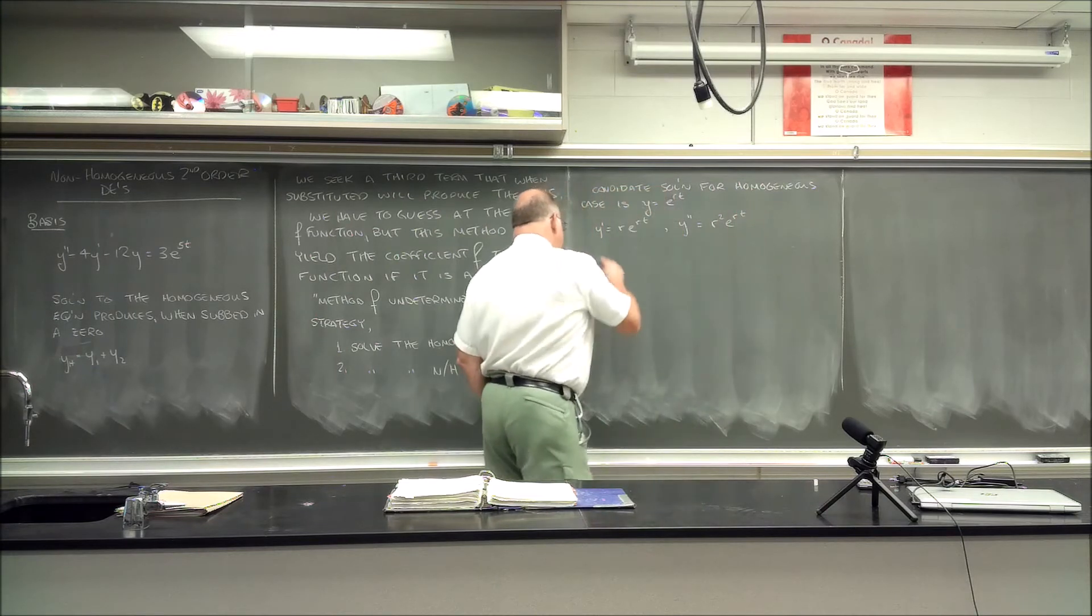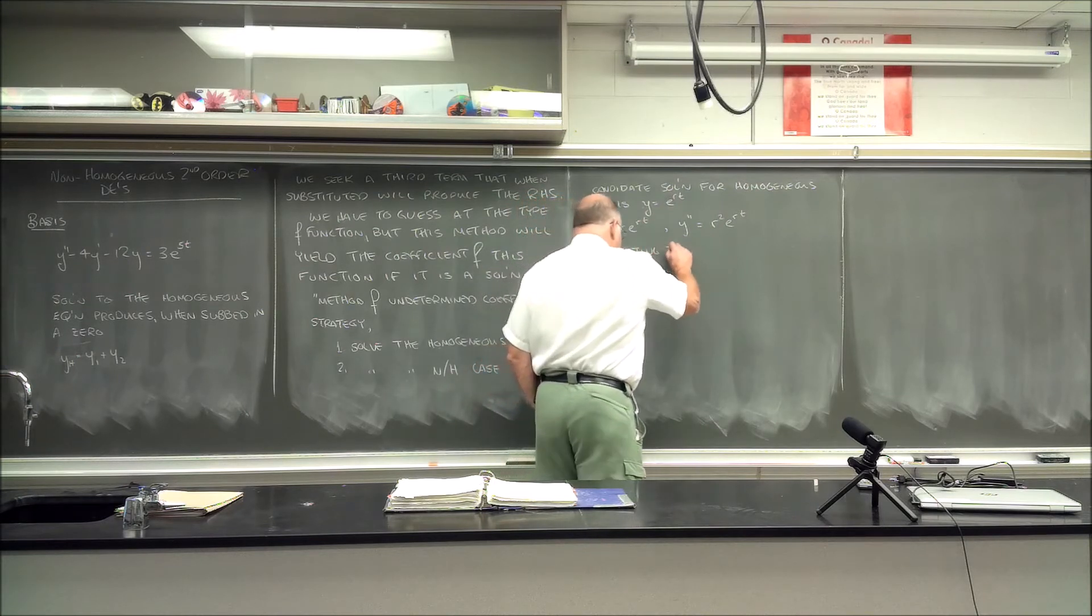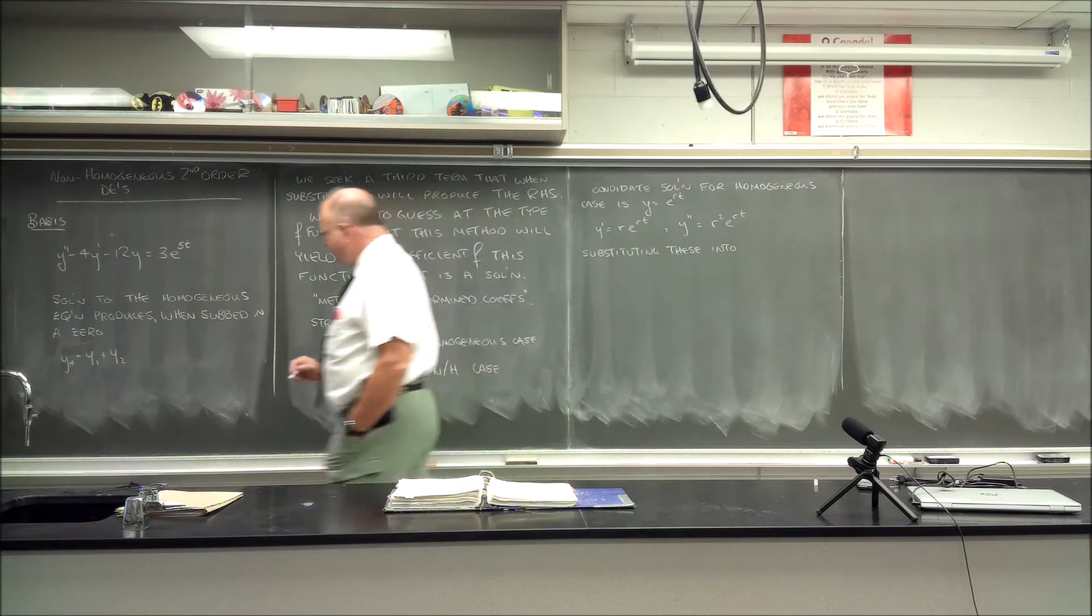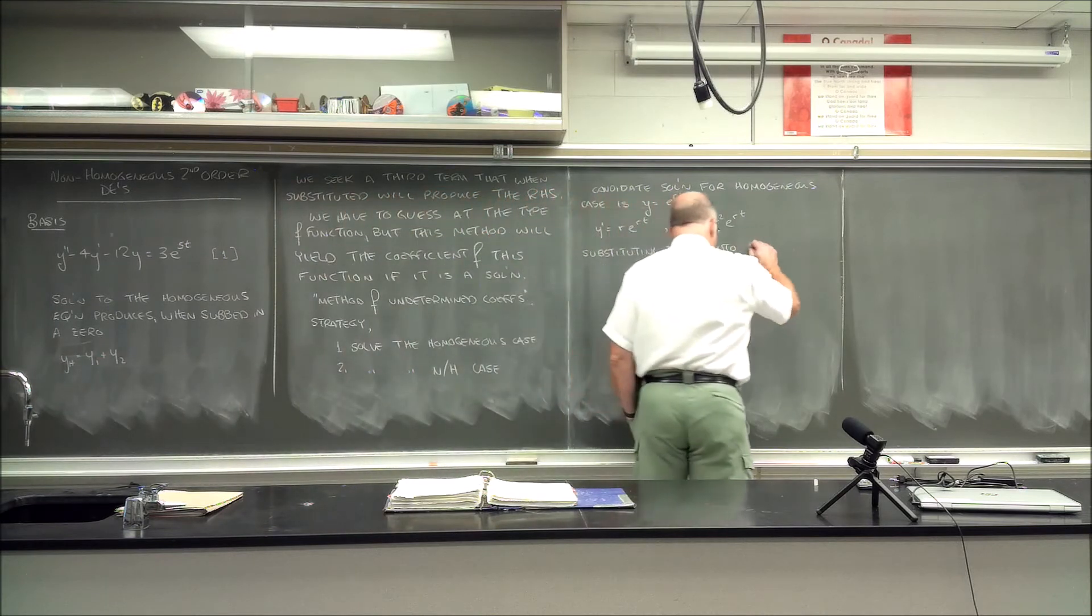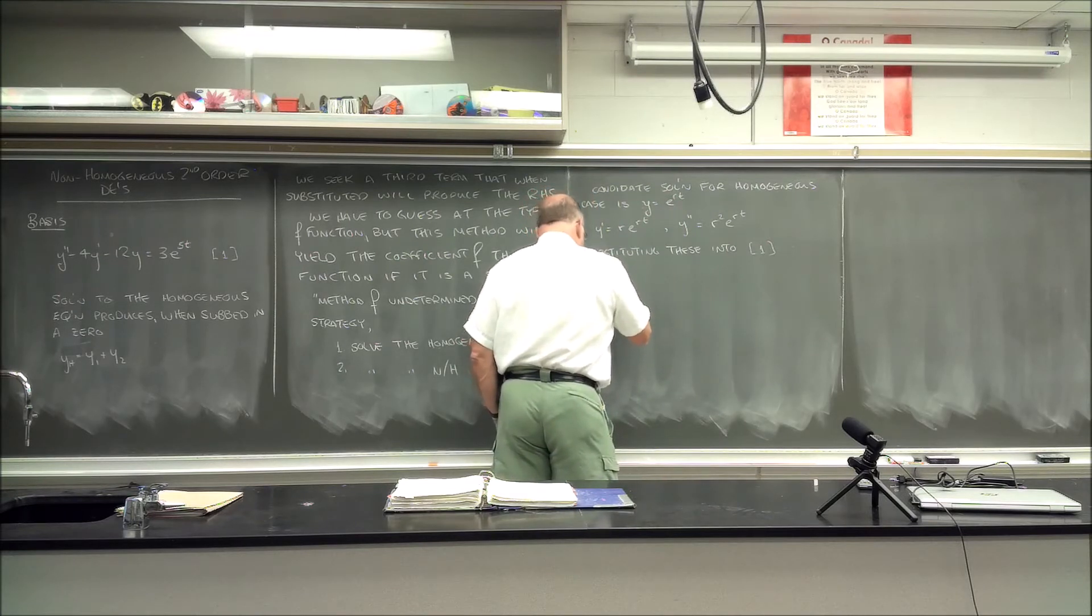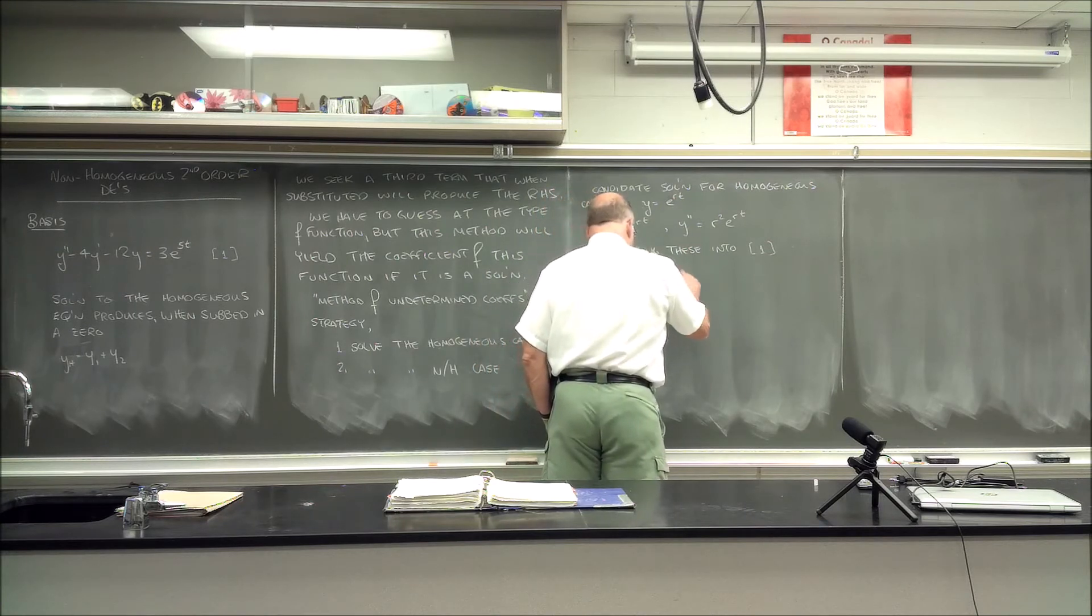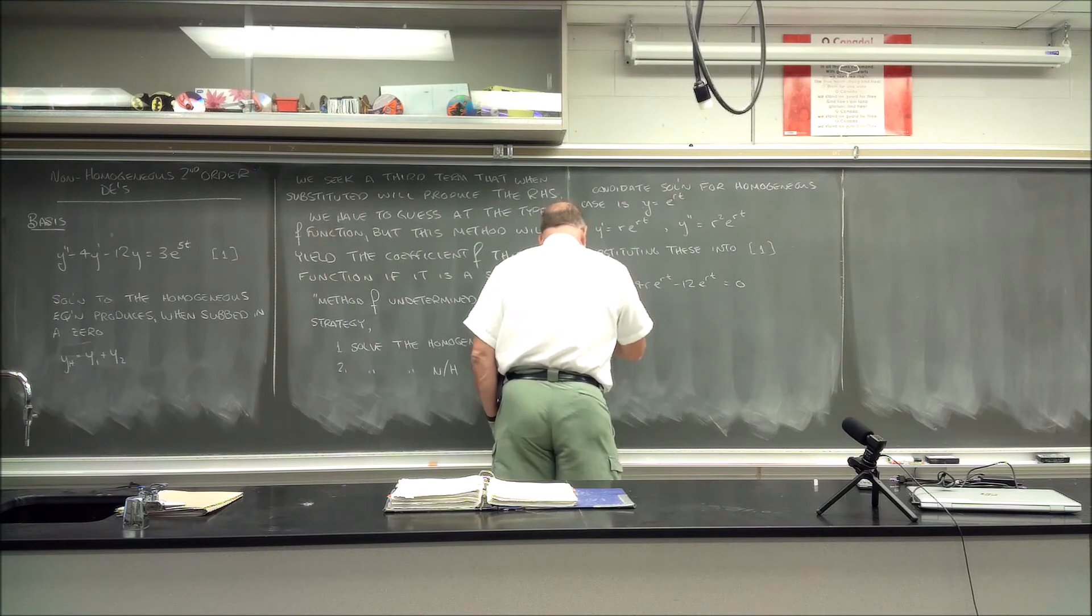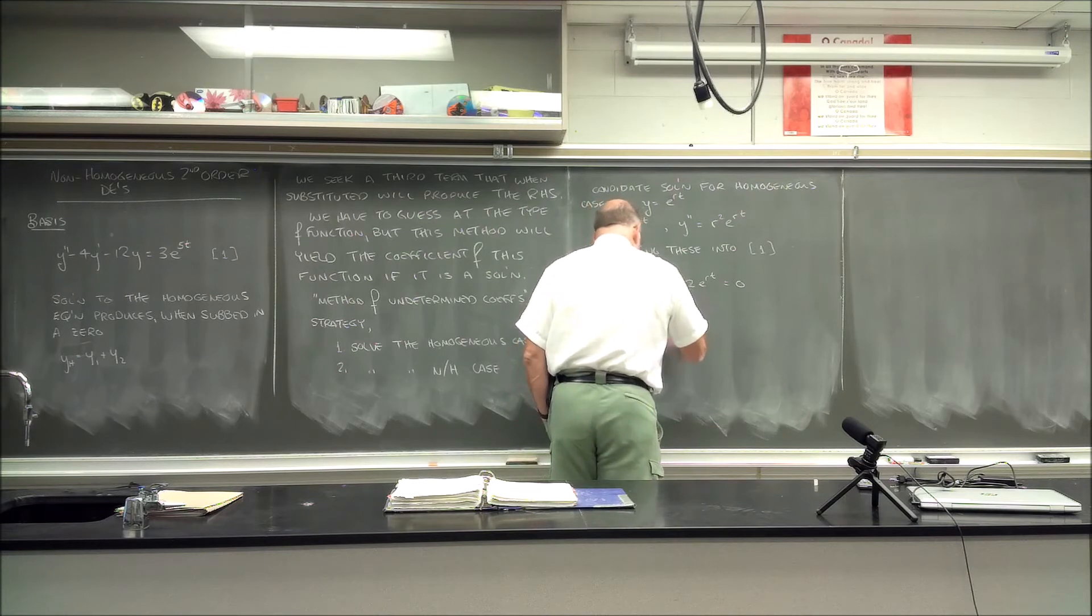And then I'm substituting these into equation 1, and so we're going to have r²*e^(rt) - 4r*e^(rt) - 12*e^(rt) is equal to 0. So we have e^(rt) factored out and now we'll have r² - 4r - 12 is equal to 0.